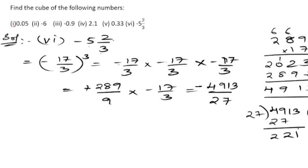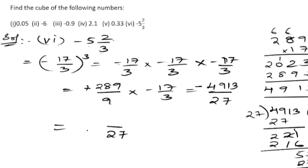Twenty-seven eights are 216, which is the nearest number. Subtracting: 221 minus 216 is 5. Bring down 3, giving 53. Twenty-seven ones are 27, remainder is 26. So the quotient is 181 and the remainder is 26, meaning the answer is minus 181 and 26/27.